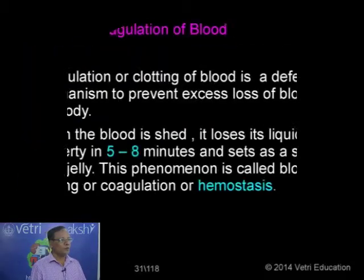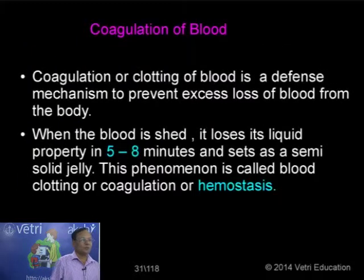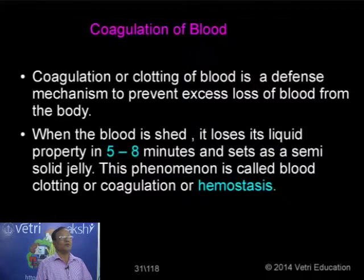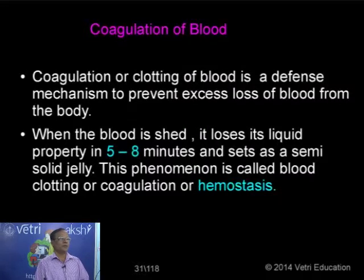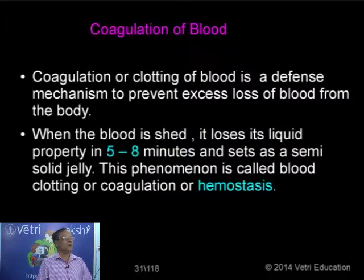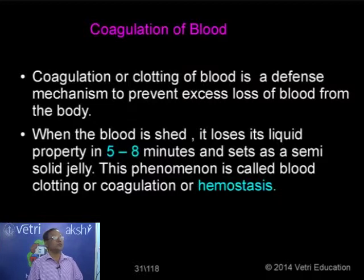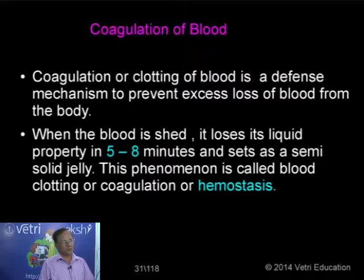We have the fluid system in the body responsible for the transport of nutrients, waste products, and various types of gases. We have seen the various components of the blood, also the fluid tissue. The next part of that system is the defense mechanism — coagulation of blood, or clotting of blood, or hemostasis.